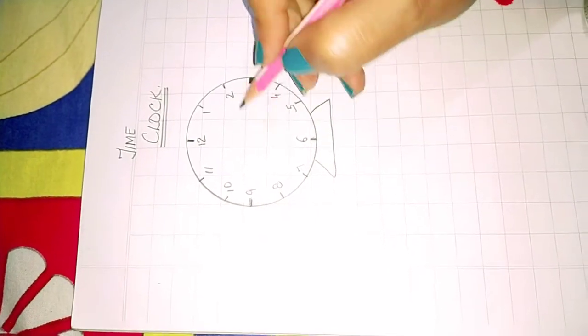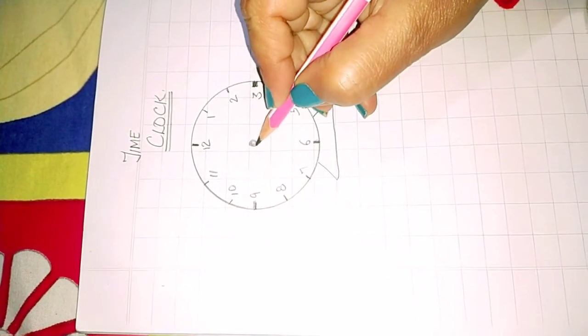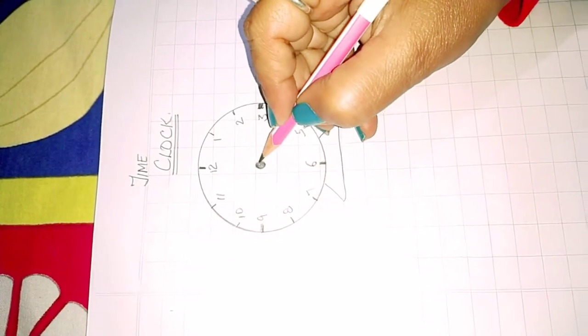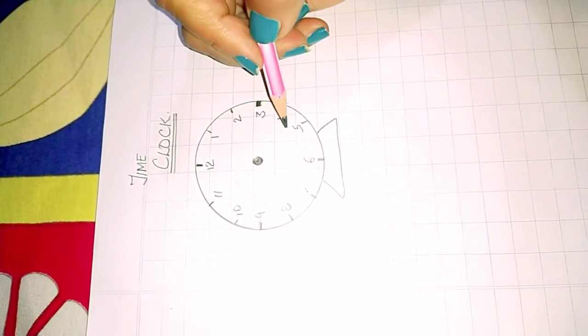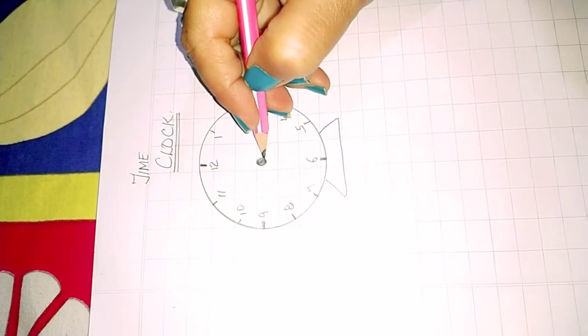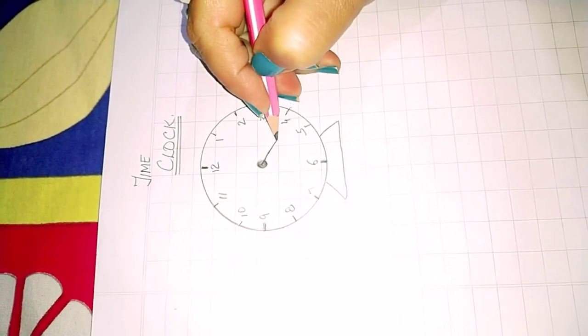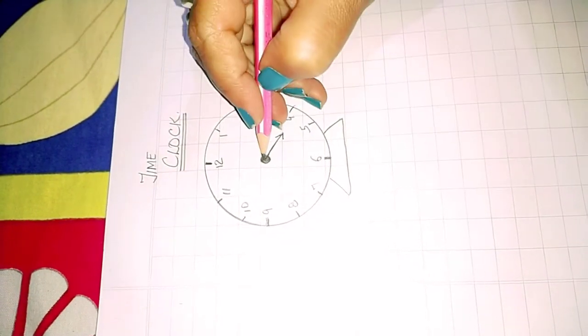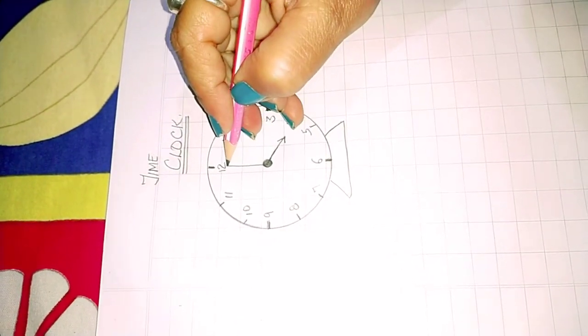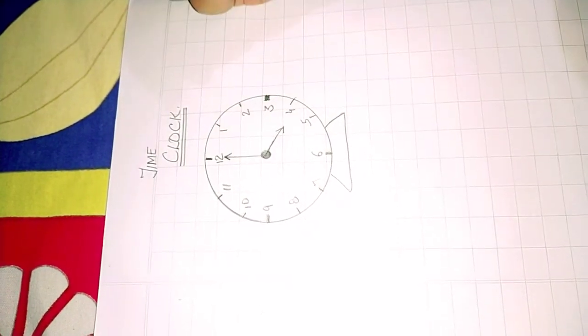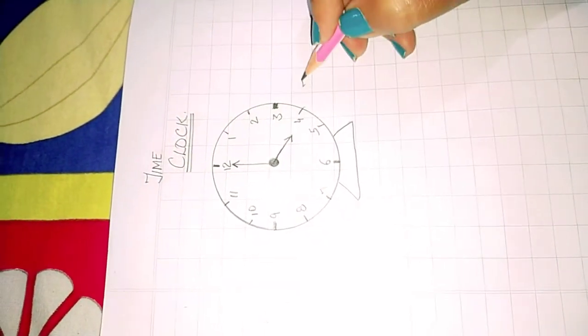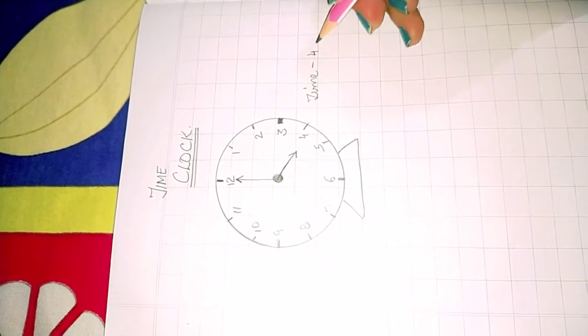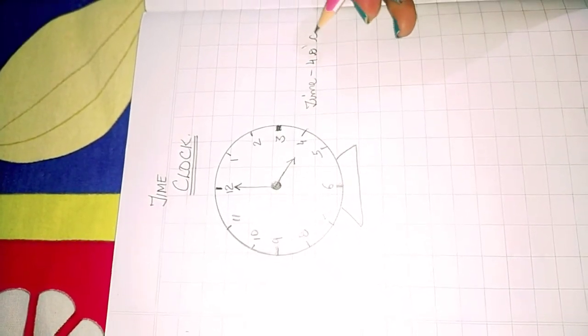Now I have to show the time 4 o'clock. So short hand will be on 4. And the long hand will be on 12. So the time is 4 o'clock.